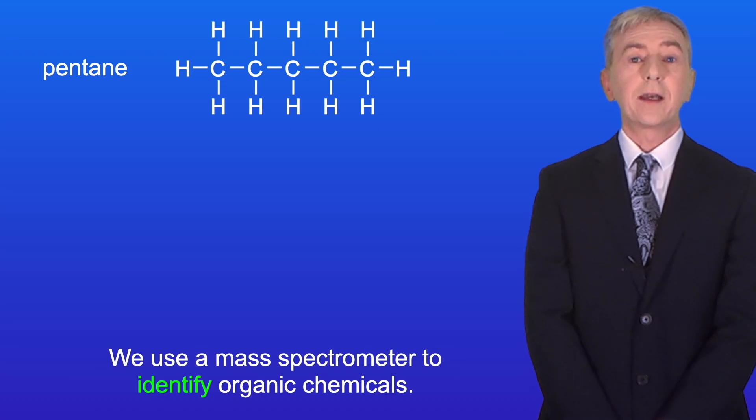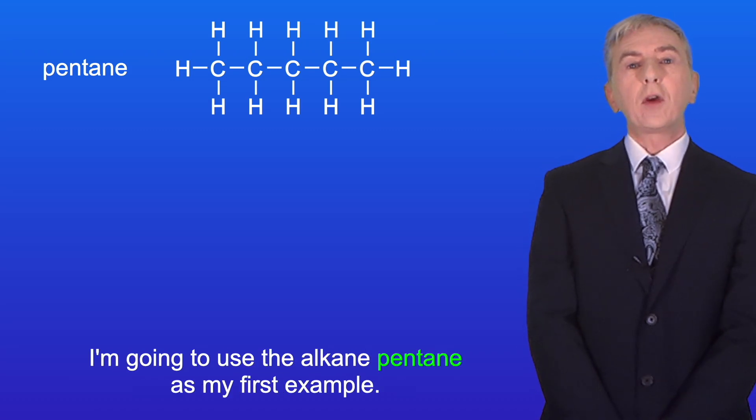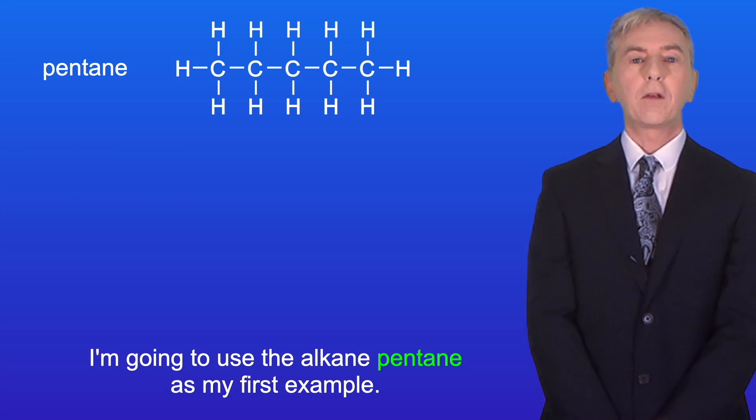Now we use a mass spectrometer to identify organic chemicals and I'm going to use the alkane pentane as my first example.